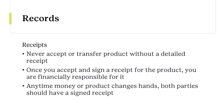Never accept or transfer product without a detailed receipt. Receipts are vital documentation for exchanging goods and verifying that all transactions are recorded accurately. Once you accept and sign a receipt for the product, you are financially responsible for it. This means you need to ensure that all product and related transactions are correctly documented to avoid discrepancies. Anytime money or product changes hands, both parties should receive a signed receipt. This ensures that there is a clear record of the transaction to help prevent misunderstandings or disputes.